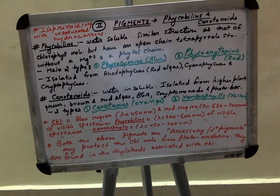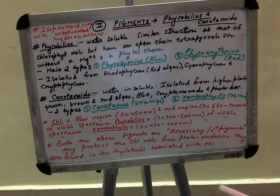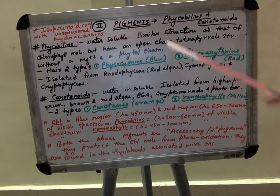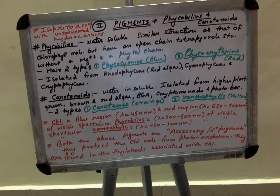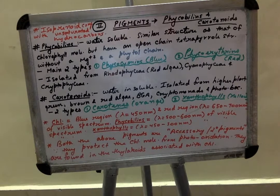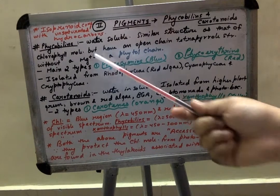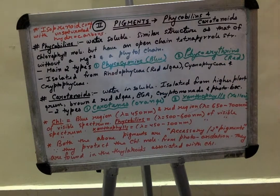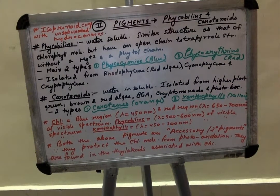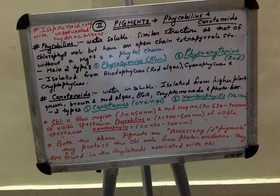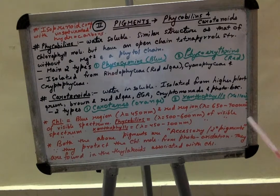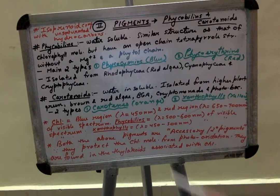Phycobillin is water soluble, unlike chlorophyll which was insoluble in water. The structure is more or less similar to that of the chlorophyll molecule, but the major difference is the structure is open chain tetrapyrol. Like in chlorophyll, there were four pyrol rings and therefore a tetrapyrol structure. Similarly, in phycobillin there is also a tetrapyrol structure.